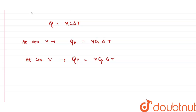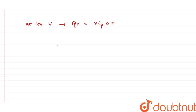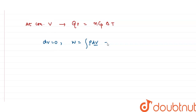At constant volume, dV = 0 — that means change in volume equals zero. When change in volume is zero, work done is zero, because work done is given by the integration of p dV, and dV = 0 for constant volume. So the work done is also zero at constant volume.